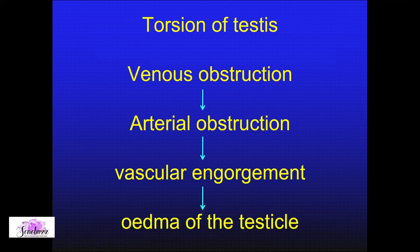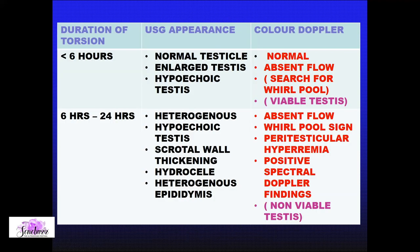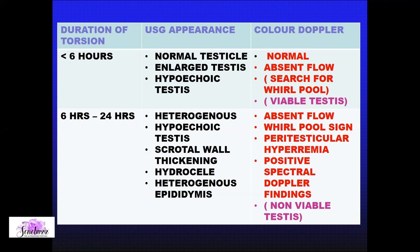Pathologically, first there is always venous outflow obstruction, followed by arterial obstruction. Once that occurs, it starts causing complete vascular engorgement leading to a completely non-salvageable testis. If a patient comes within the first six hours, many times you might report a normal-looking testis because the inhomogeneous appearance is not yet present — but the whirlpool will always be there.